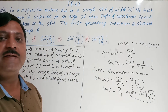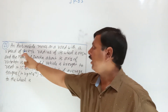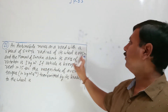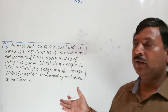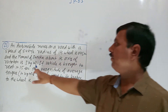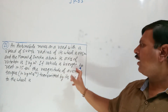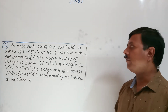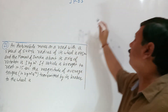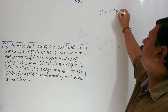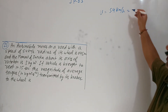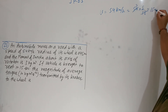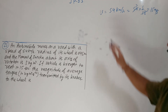Numerical-based question: an automobile moves on a road with speed 54 km/h, radius of wheel 0.45 meter, moment of inertia given as 3 kg·m². If the vehicle is brought to rest in 15 seconds, find the magnitude of average torque. First, convert speed: 54 km/h times 5/18 equals 15 m/s.